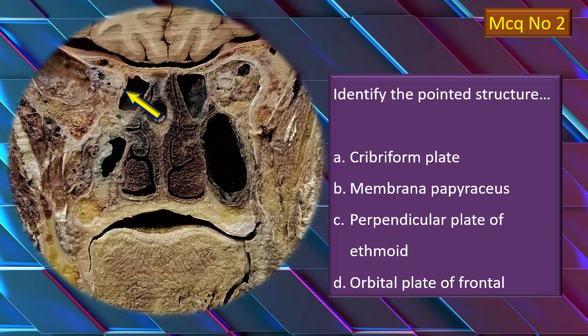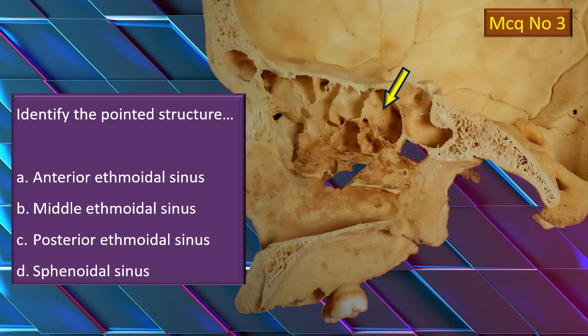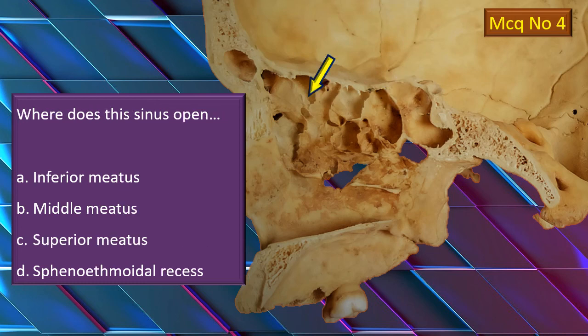MCQ number two: here is a coronal section through the head. Identify the structure pointed to by the yellow arrow — there are a few options. Check your answer later on. MCQ number three: what is this pointed structure? There are four sinuses mentioned, so you can reframe this as 'identify the sinus or which component of the main sinus.' Think over and freeze your answer. MCQ number four: a sinus is pointed out by the arrow. The question is not to identify the sinus, but where does it drain? There are a few drainage spots — one is correct. Think over and freeze your answer.